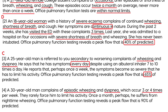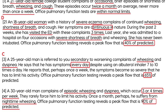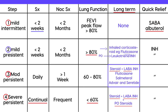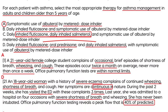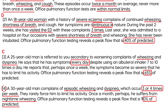A 30-year-old man has episodic wheezing and dyspnea three to four times per week, rarely limiting activity. He has nighttime wheezing once a month. Peak flow is 90% of predicted. Symptoms three to four times a week with a good peak flow places him in Step 2. He needs his albuterol inhaler plus an inhaled corticosteroid — fluticasone. The answer is B.